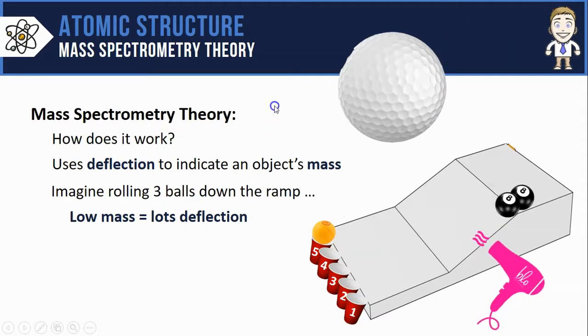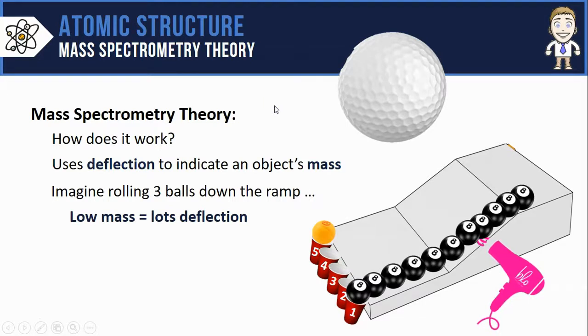Do the same thing with the eight ball, and the eight ball is much heavier, so it might not be deflected at all. At least not in any detectable way by the hair dryer, and it exits in cup one. The point again, the more mass an object has, the less deflection it will experience.